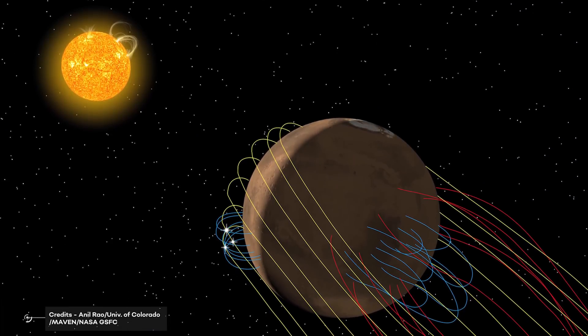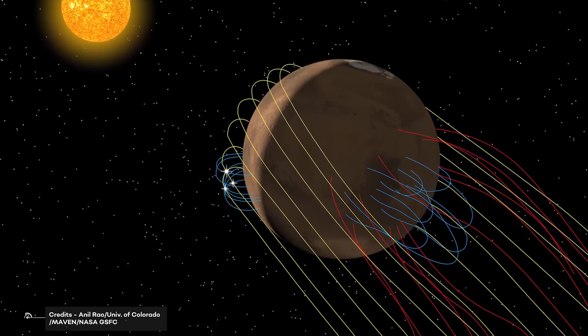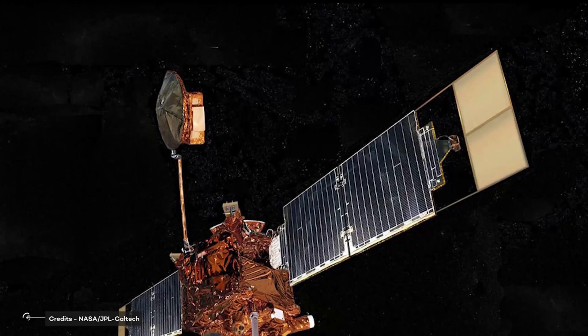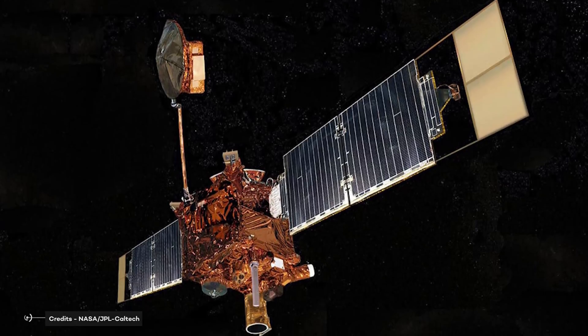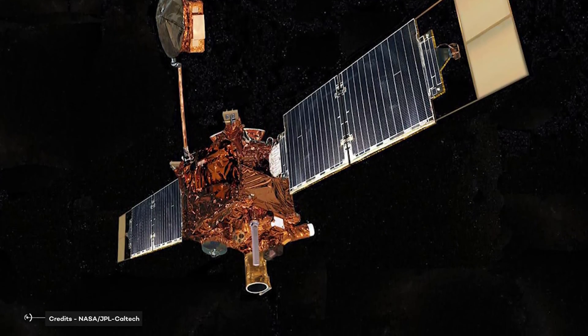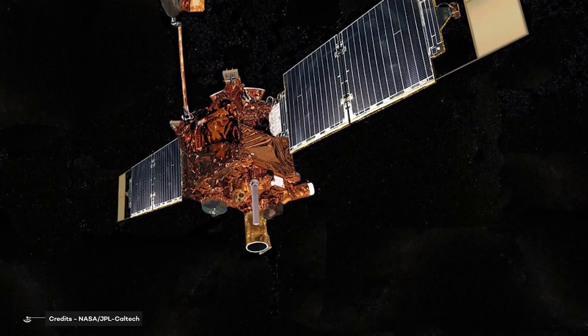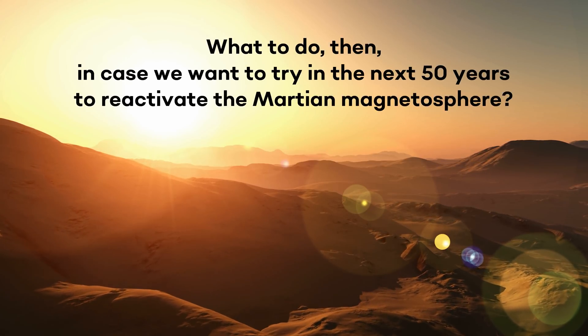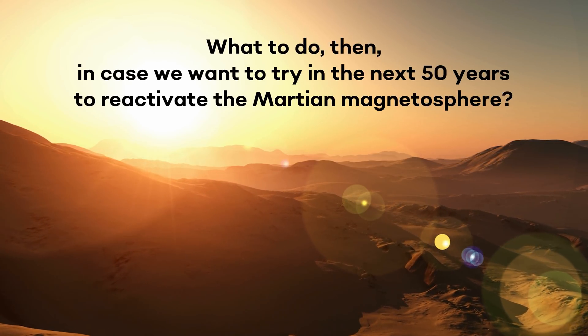Mars' dynamo, on the other hand, died out billions of years ago. Currently, the red planet has only residual local magnetic fields concentrated in the southern hemisphere. However, data collected by the Mars Global Surveyor orbiter, active between 1999 and 2006, has shown the presence of rocks magnetized by a magnetic field still active about 3.5 billion years ago. And with that, we return to the initial question. What to do, then, in case we want to try in the next 50 years to reactivate the Martian magnetosphere?